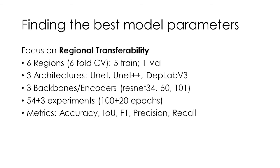We iterated through all combinations, and for the best three regions we also ran a full training. For running experiments we used a condensed dataset using only tiles that contain thaw slumps, and for full training of the best models we added another 20 epochs. For evaluation we used overall accuracy for this binary segmentation task, and for class-specific accuracies we used Intersection over Union (IoU), F1 score, and precision and recall to assess the balance of the classification.